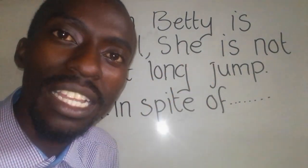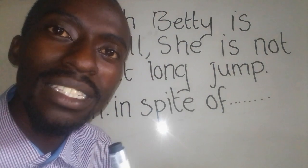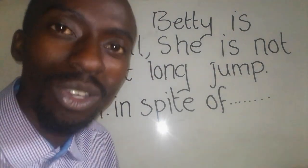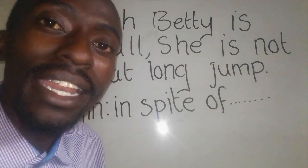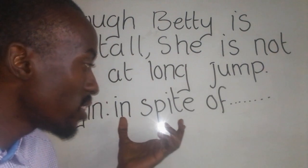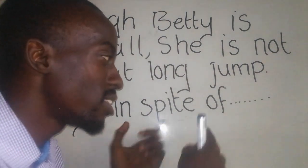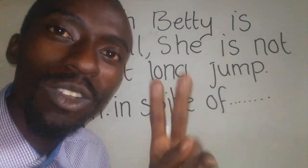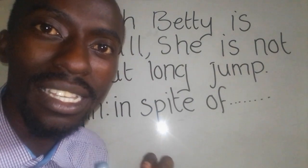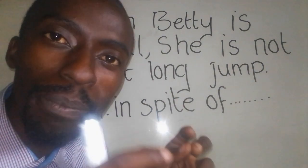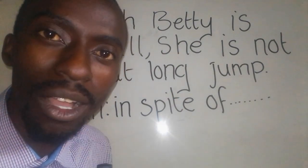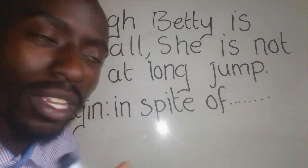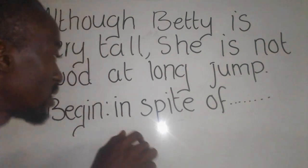These two prepositions simply mean 'regardless of' or 'even though.' Now, if you are starting a sentence with these prepositions, there will be two sentences separated by a comma. Look here for the example.